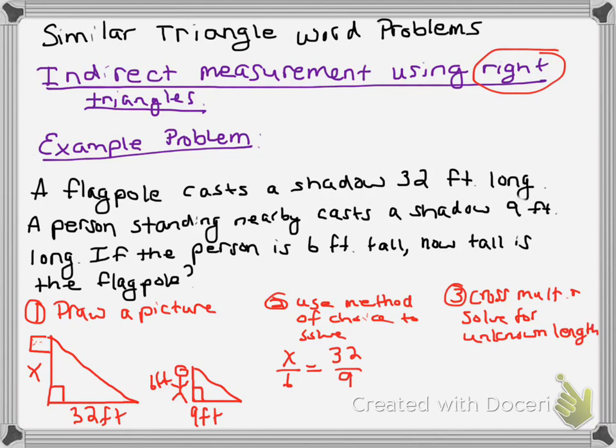So I get 9X equals 32 times 6. 32 times 6 is 192. I'm going to divide by 9. 192 divided by 9 gives me 21.3. The answer is that the flagpole is 21.3 feet tall.